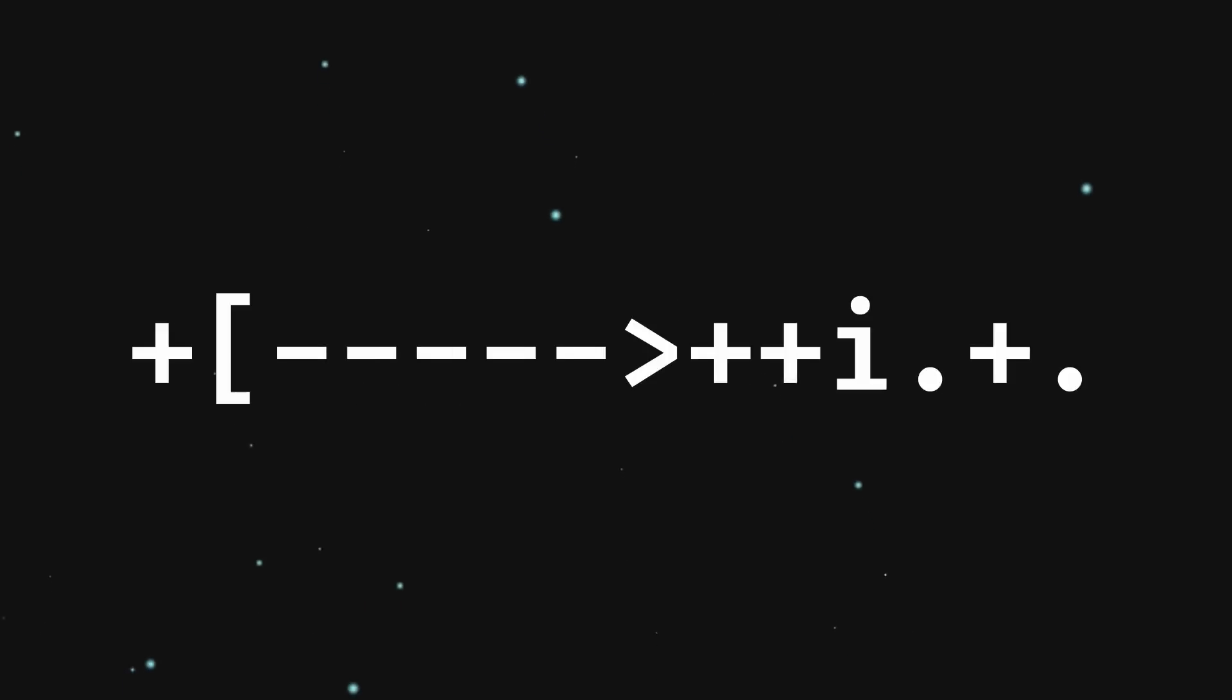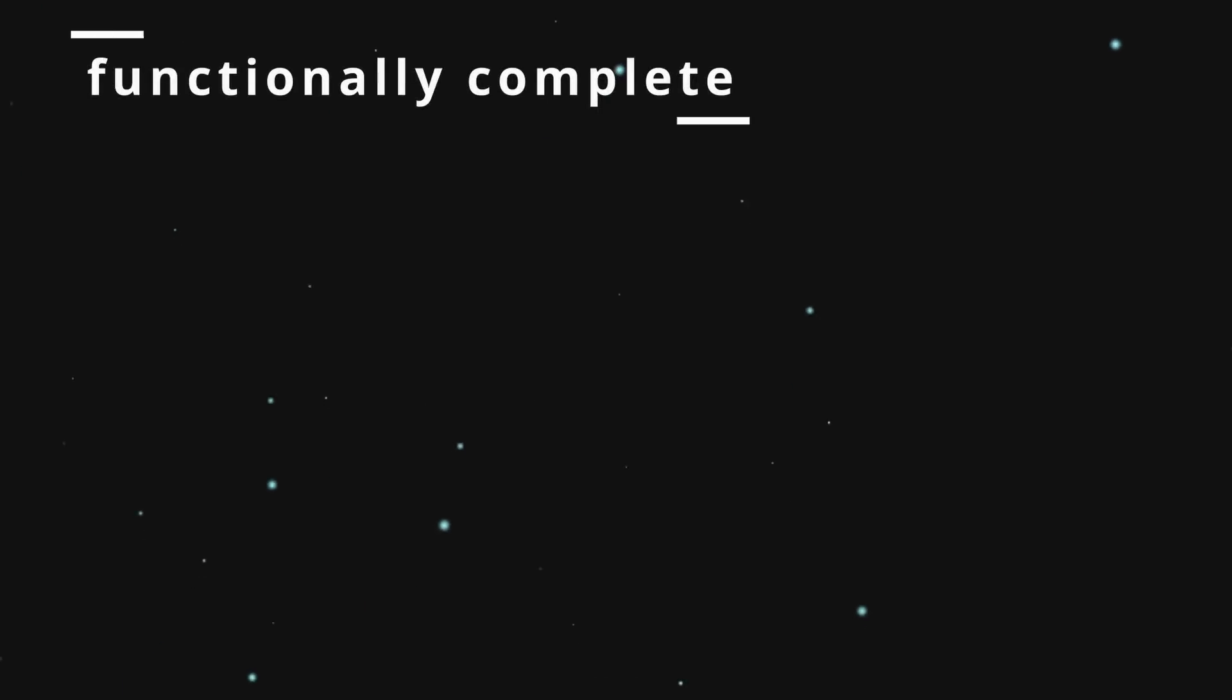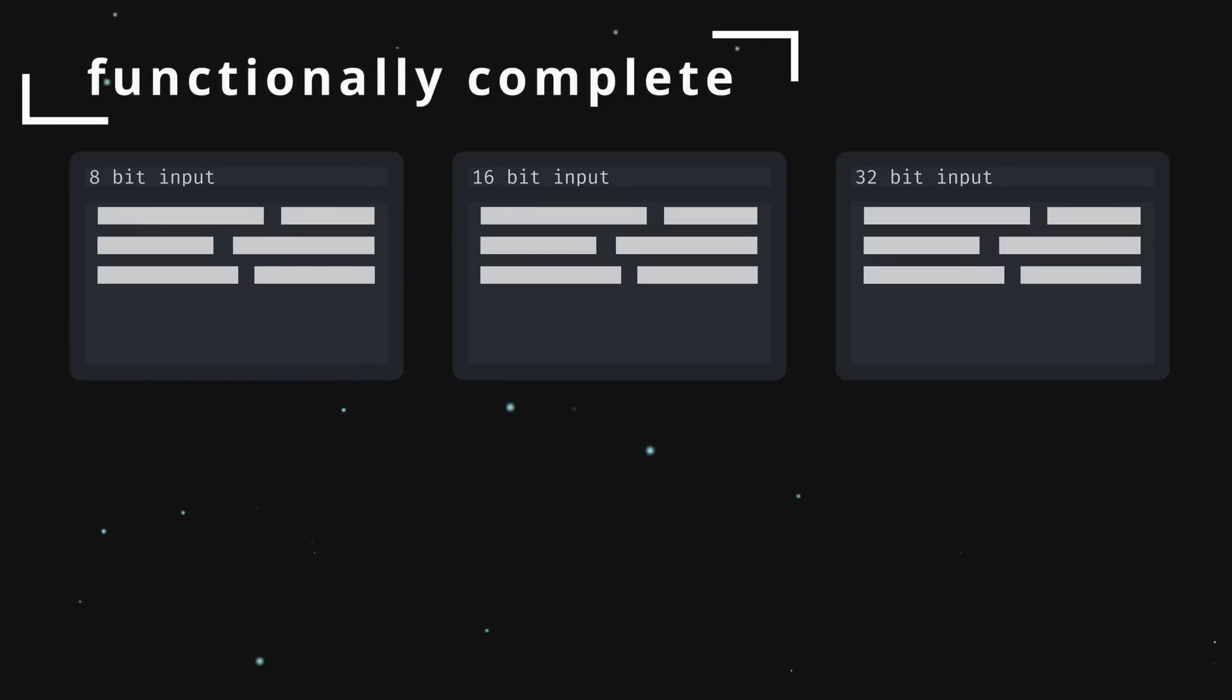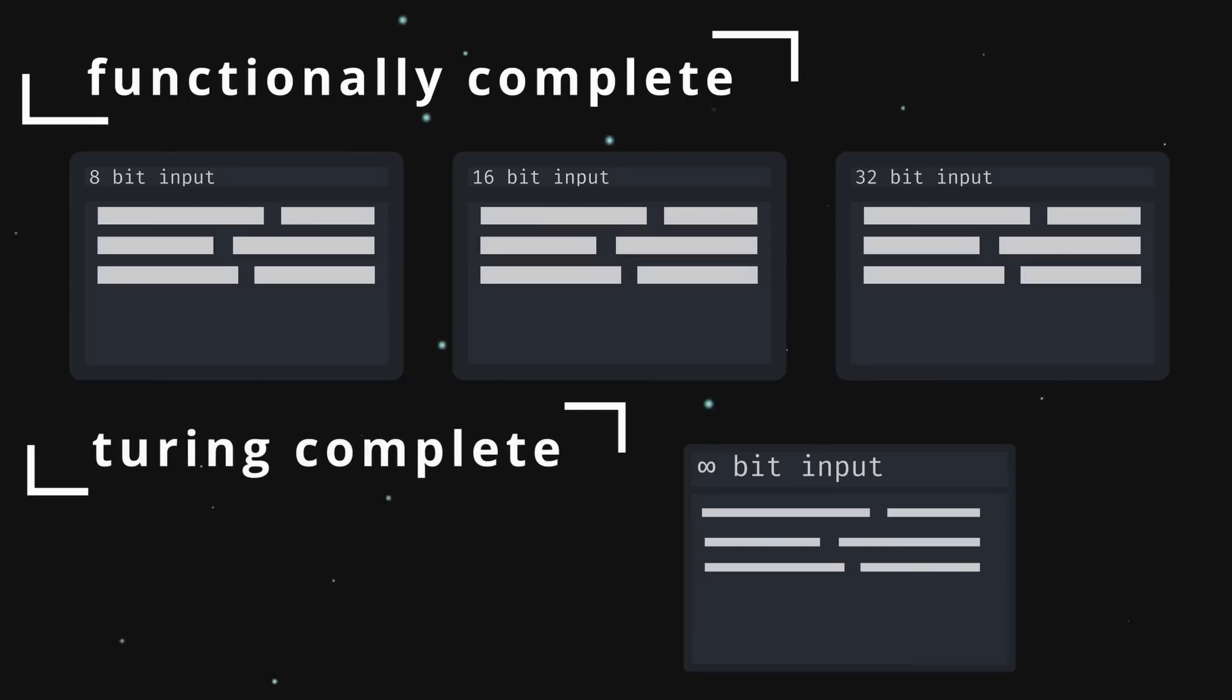Say you want to make a text-to-brainfuck converter. A functionally complete system will let you make a separate program for every x-bit input, whereas a Turing complete system will let you make one program which takes any input size.